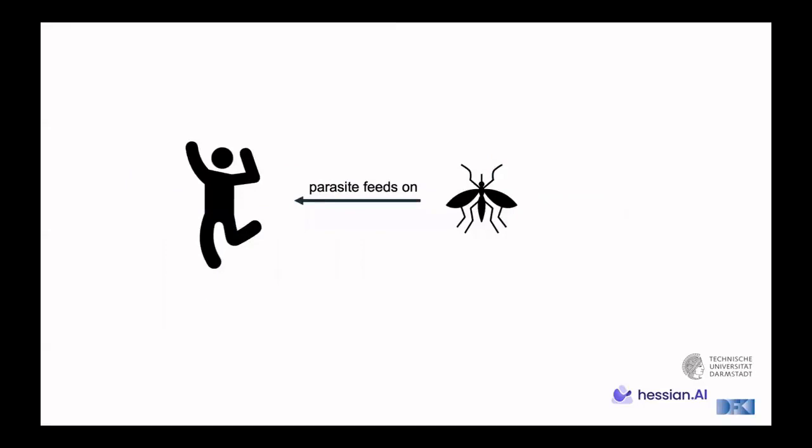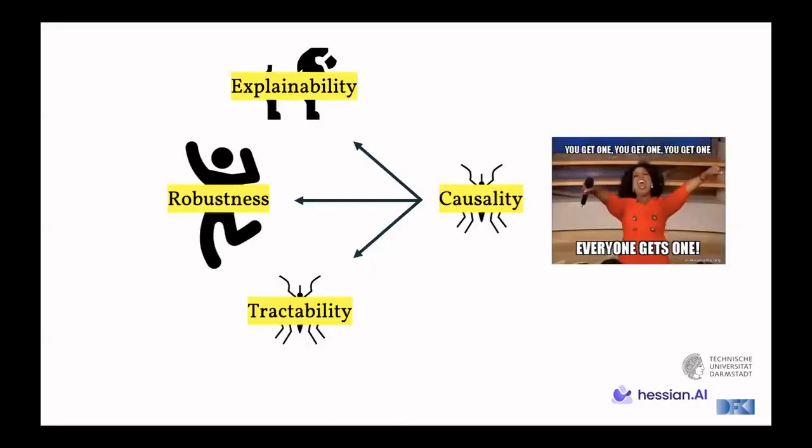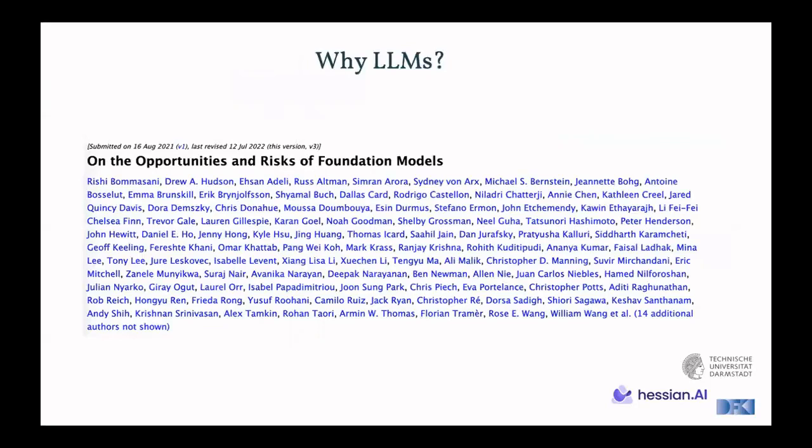A quick analogy. We can see a mosquito here, a parasite, and it feeds on human beings. It can be quite annoying. But they also feed on other parasites, but also other animals in general. We can actually make this an analogy for causality for AI and machine learning, because causality will actually have something to say in all of these on the left, explainability, robustness, tractability, and so on and so forth. That's the overall motivation for causal AI, because it's very versatile as a tool.